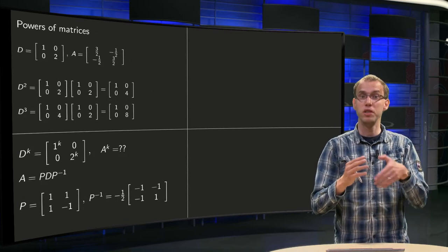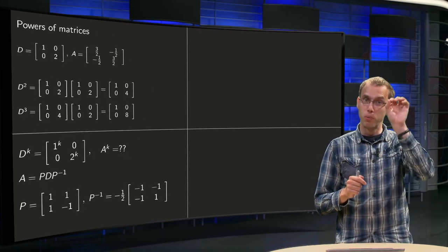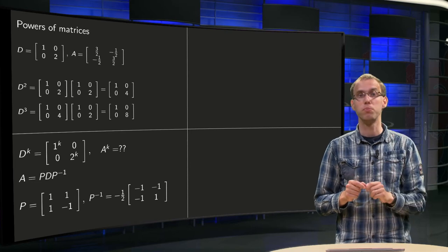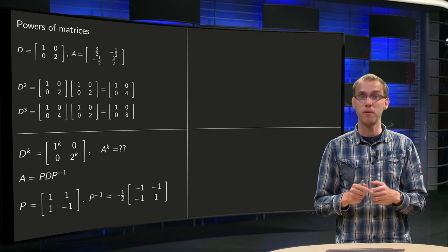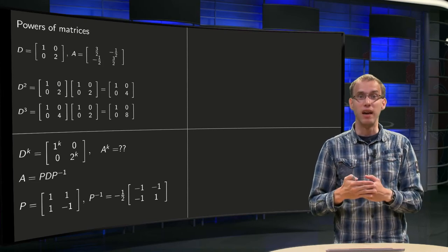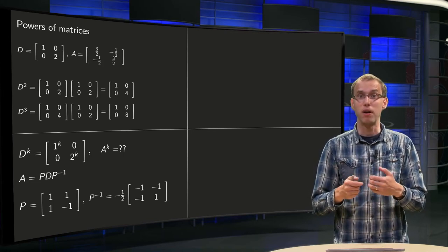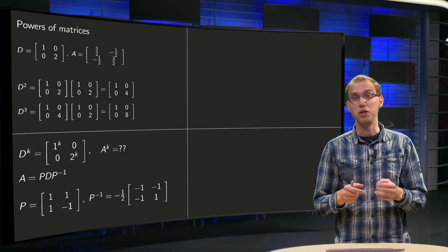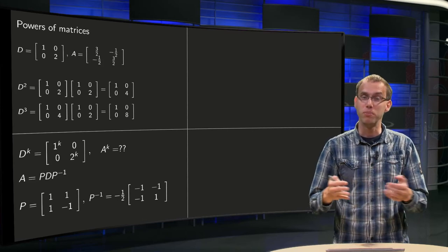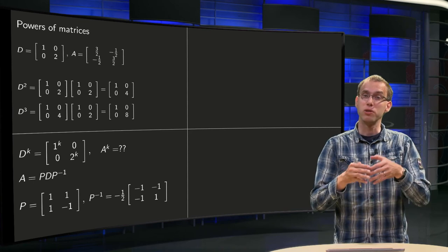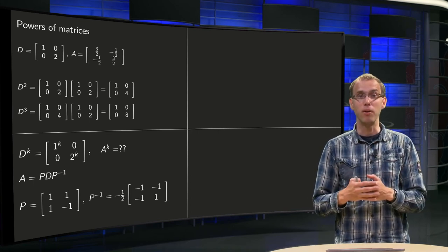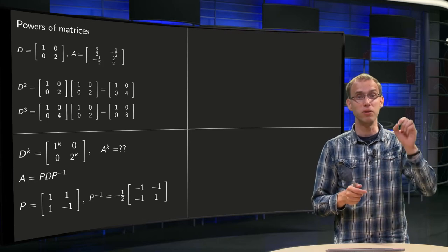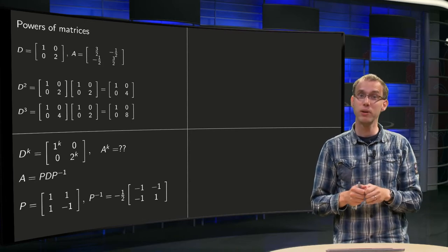If you want to compute D to the power k, you have your 1 to the power k, first spot on the diagonal element, and 2 to the power k, say 2, 4, 8, etc., on the other spot. So, computing higher powers of diagonal matrices is a lot easier than computing powers of some general matrix, because in general this works. If you want to compute the kth power of a diagonal matrix, you just have to take the kth power of all diagonal elements.